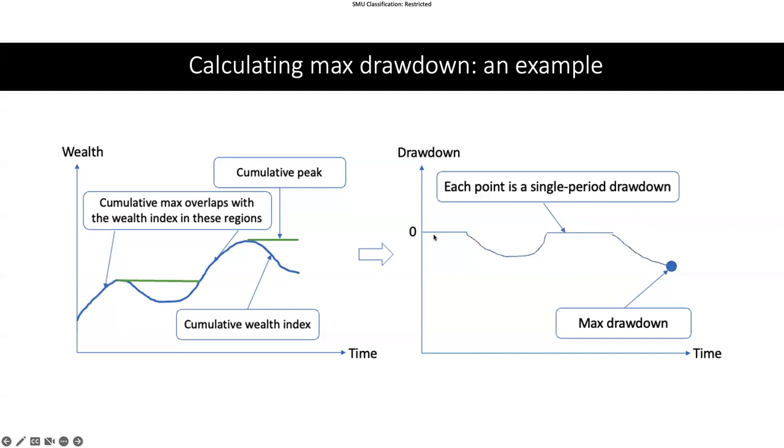At first the gap is zero because it overlaps, and then it goes down because the gap is becoming bigger. Then the gap closes so it becomes flat again, meaning the drawdown is zero. Then the gap becomes bigger again.